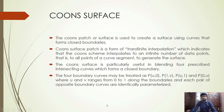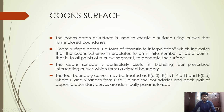Now we will get into the Coons surface in detail. The Coons surface is a closed-form surface with closed boundaries. Unlike Bezier or B-spline surfaces, this is a closed surface. The Coons surface patch is a form of transfinite interpolation, which means the Coons scheme interpolates to an infinite number of data points — that is, all points of curve segments — to generate the surface. It is particularly useful in blending four prescribed intersecting curves which form a closed boundary.